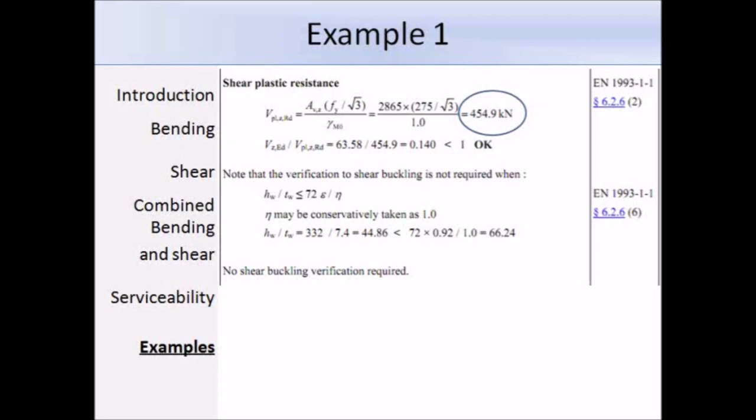Below is a section about shear buckling, and we don't need to check for shear buckling if this condition is met. Here they've put in the values, and we can see that 44.86 is less than 66.24, therefore, no shear buckling verification is required.